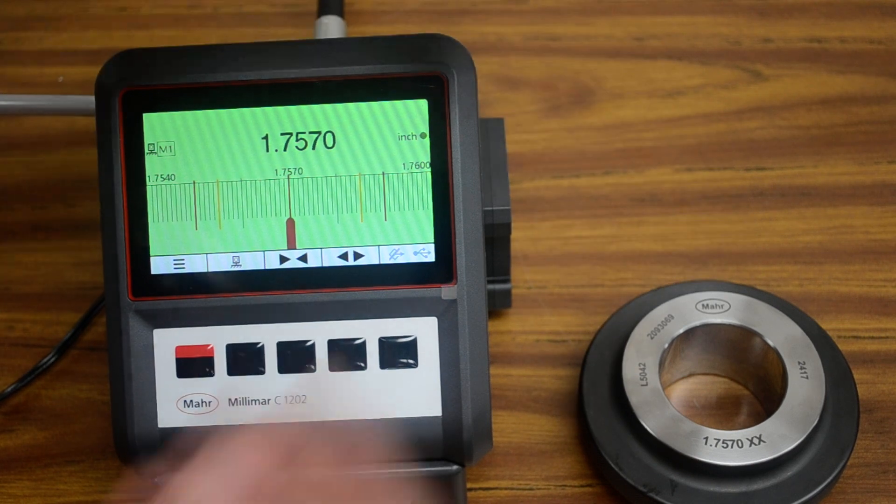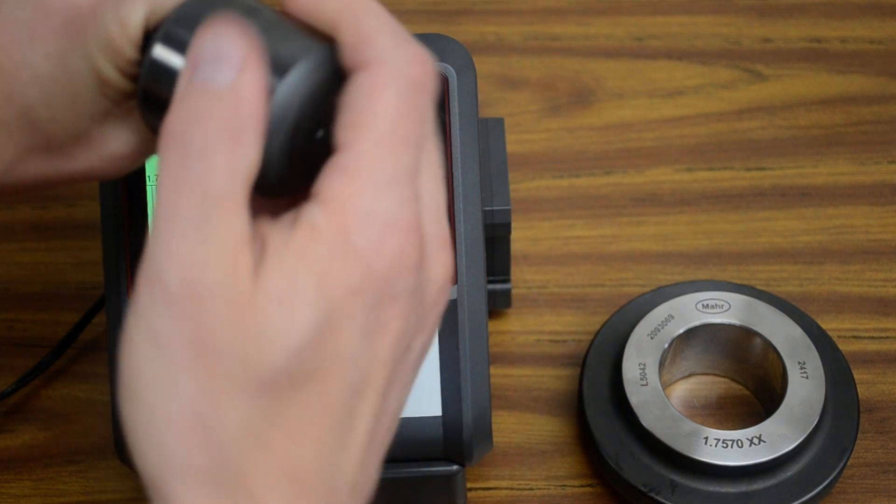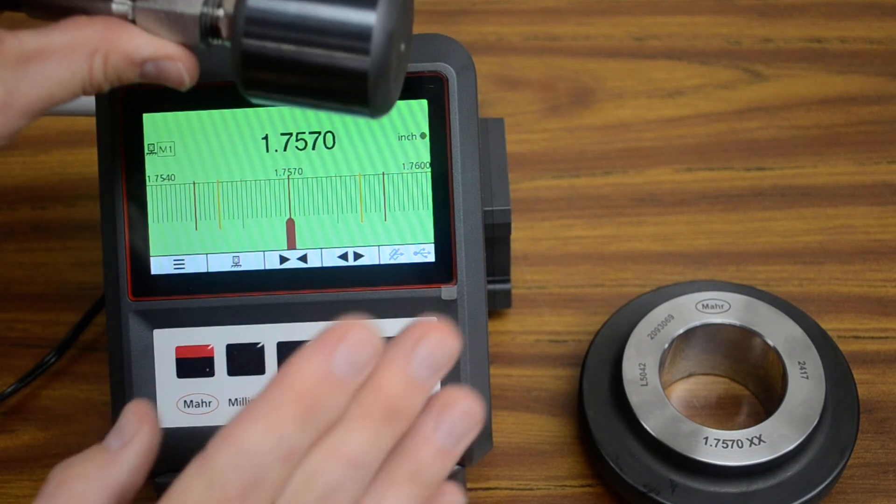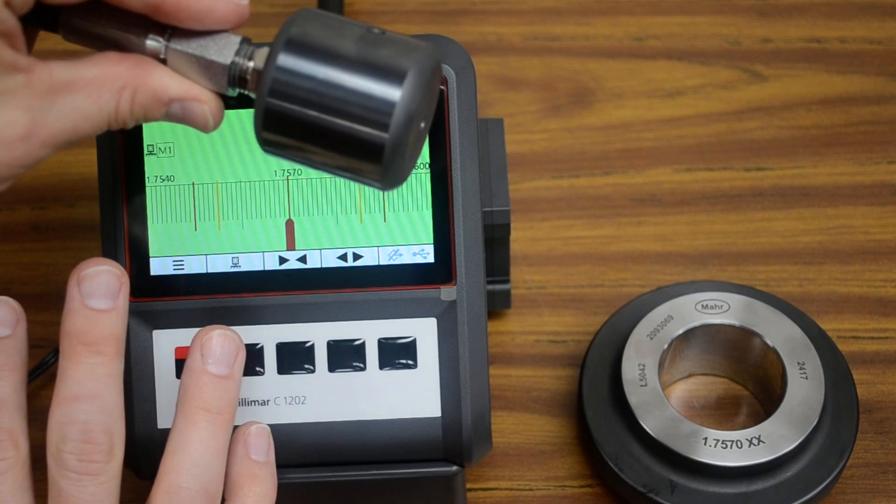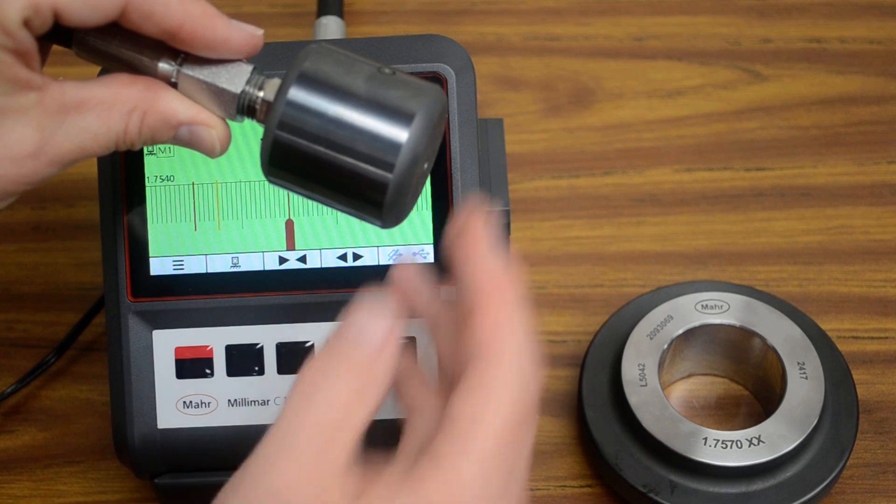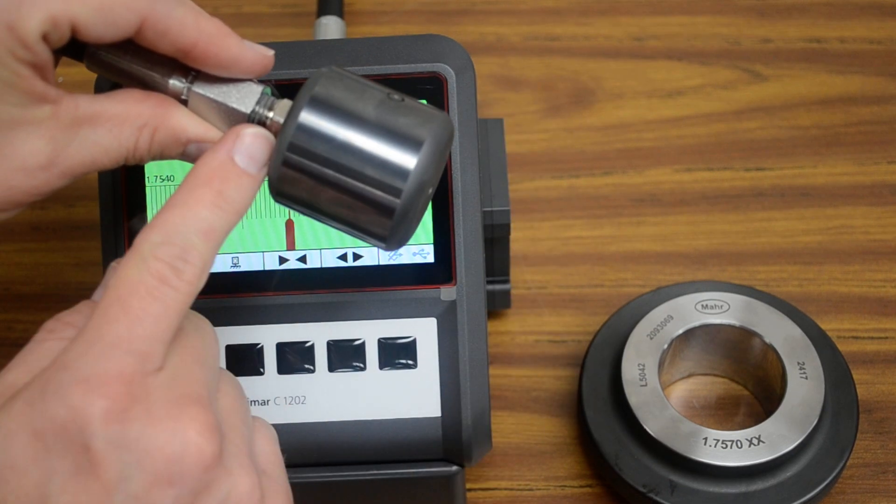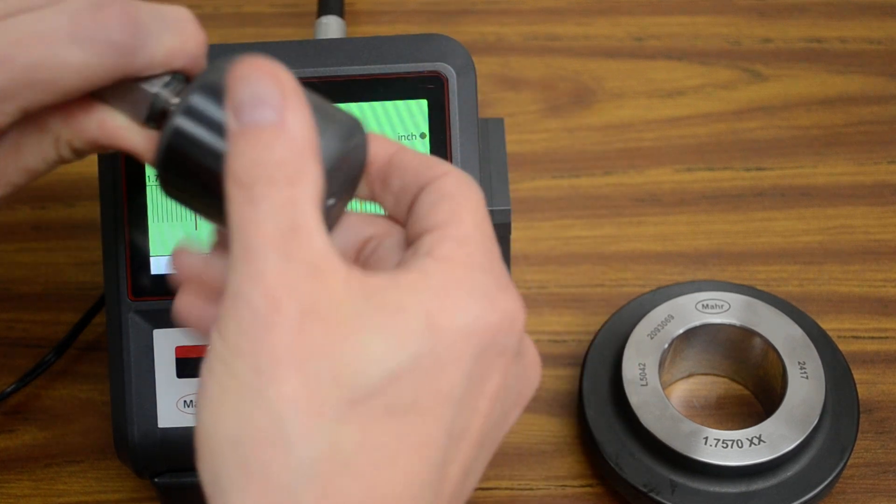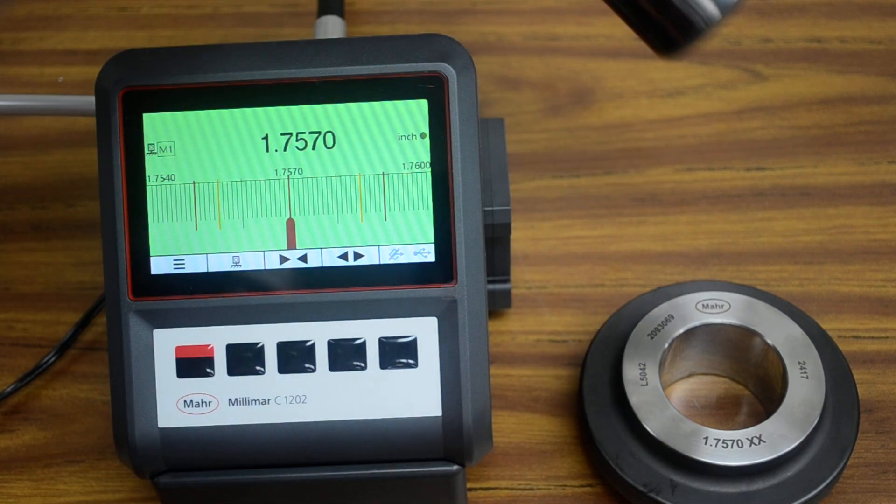The air plug just gets screwed directly onto the end of the hose. You do not need any sealant or pipe tape or anything like that. There's an O-ring in the bottom of this pocket here and it creates a face seal. All you need is some light hand pressure. Don't use a wrench, it's not necessary.